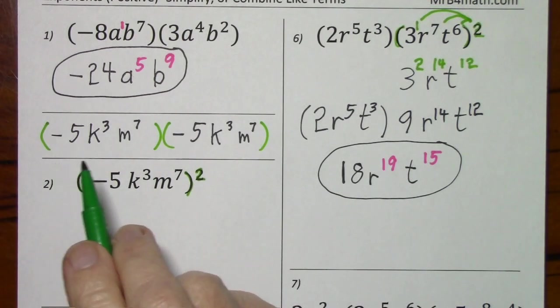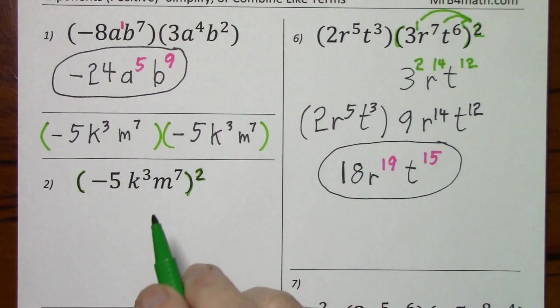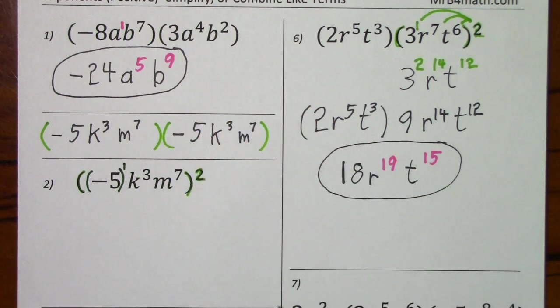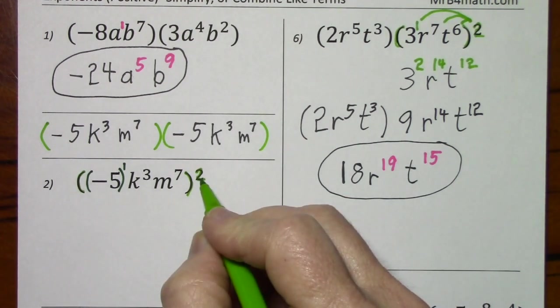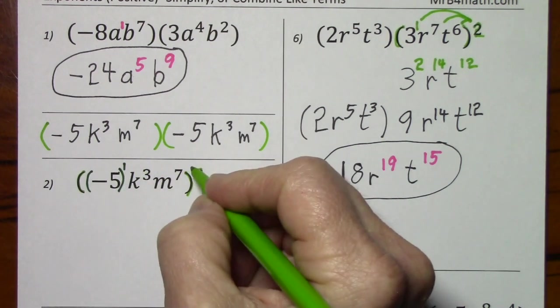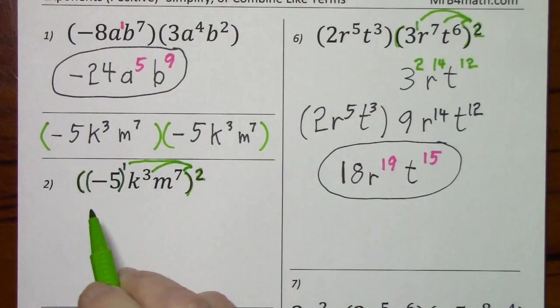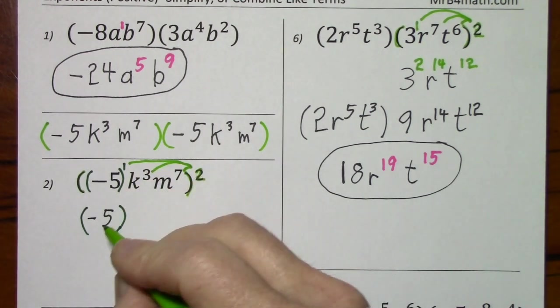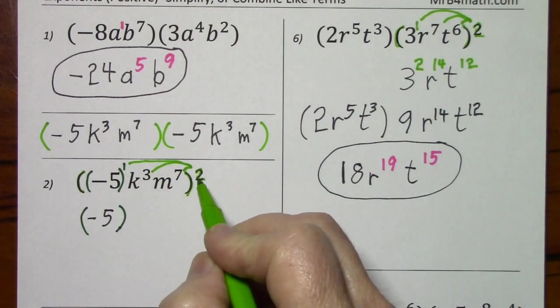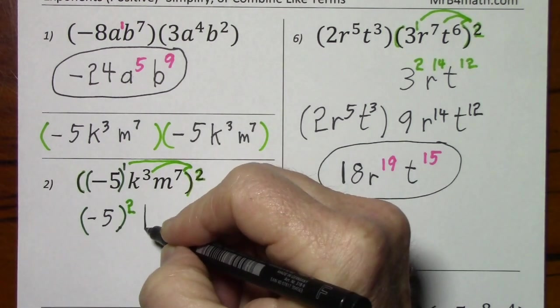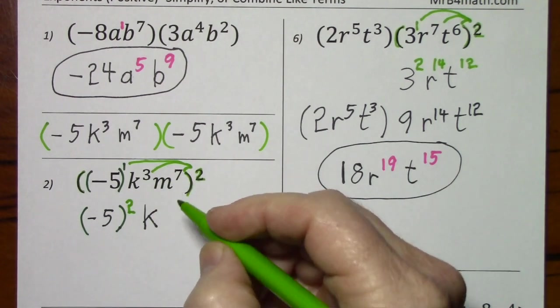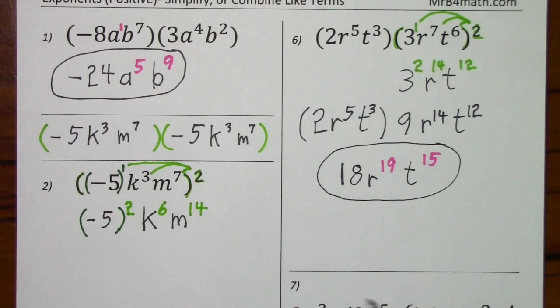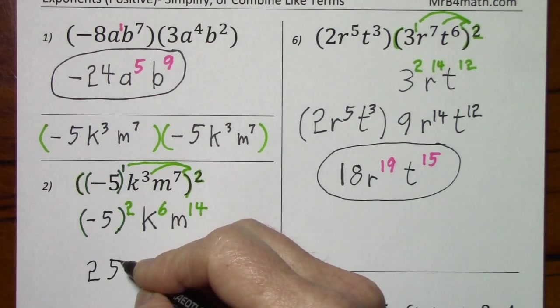So now I've taken care of this exponent by writing this twice. So you can see we would have negative 5 times negative 5. So to preserve this, I'm just going to come in here, put a set of parenthesis with my exponent. So when I use the power rule, multiplying each exponent by 2, I keep up with this negative appropriately. So we would have negative 5, 1 times 2 squared, K 3 times 2, and M 7 times 2. So negative 5 squared and just bring these down.